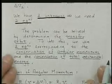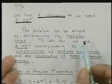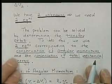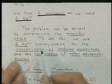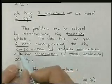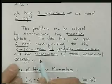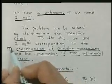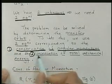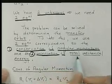And fortunately, this problem can be solved by determining the transfer orbit, the elliptic transfer orbit we talked about. And to do this, we use two equations corresponding to the conservation of angular momentum, and secondly, the conservation of total mechanical energy.